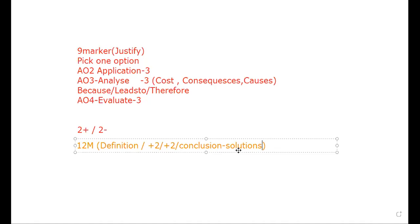The conclusion can include: solutions to problems raised, an alternative viewpoint, or an overall recommendation without being too one-sided. For example, if a multinational company causes environmental pollution, the conclusion can say: 'Yes, the pollution can be controlled by proper government regulation.' You can also suggest alternative possibilities. In future sessions we will do nine-marker and 12-marker practice questions.